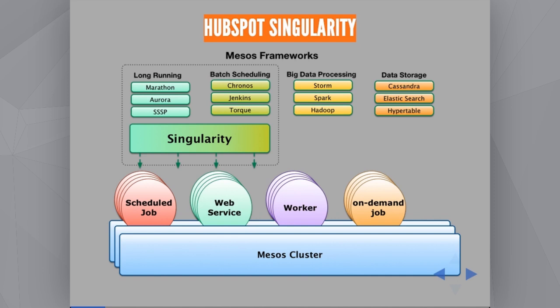You have already realized, I suppose, that in the Mesos ecosystem most of the frameworks are quite vertical inside the domain. Even inside the domain, they support a specific technology — for example, Hadoop or Spark. We took the completely opposite direction, and we want to have a unified environment and a consistent API to support all the different use cases.